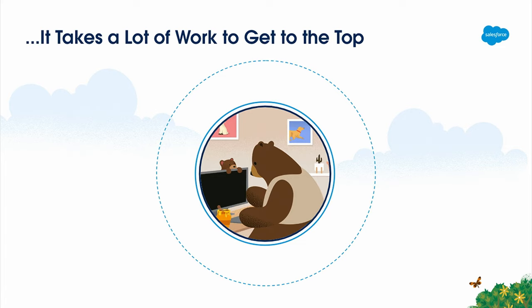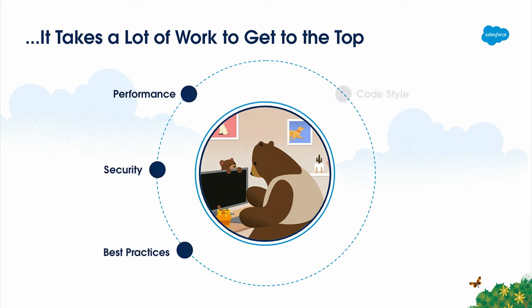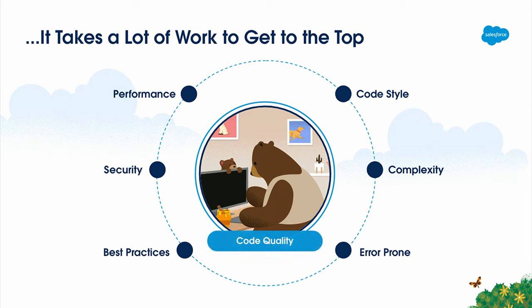If we back away from this mountain metaphor, getting to the top really means a few things. While I'm building, I'm focused on performance, security, and best practices. After I do all that building, I still have to worry about code style, complexity — is my code too complex or not complex enough? — and errors. All of this is in service of getting to that peak of high quality code delivered as quickly as possible.